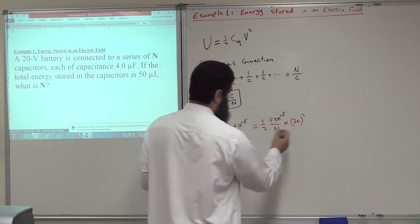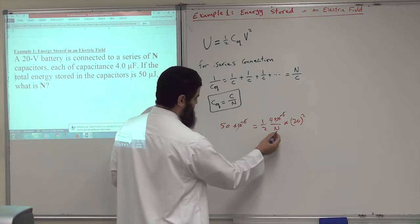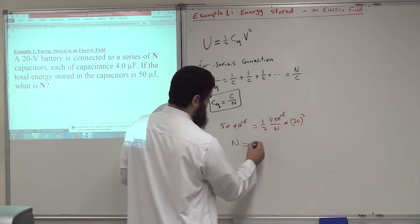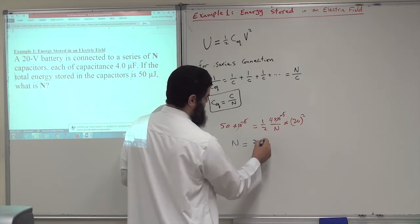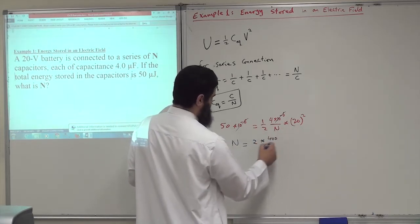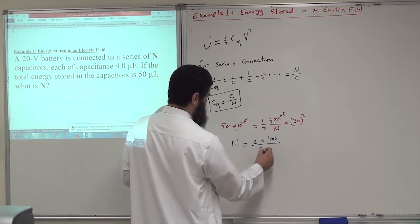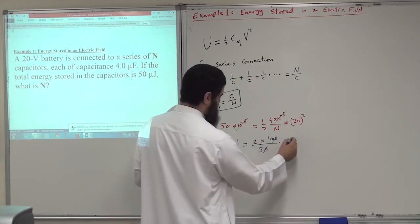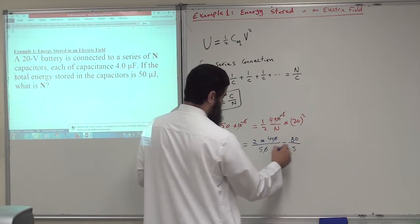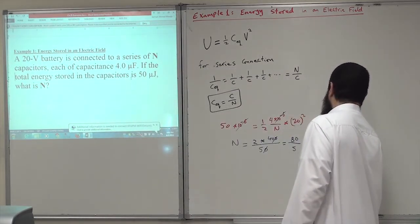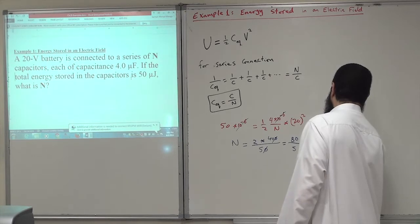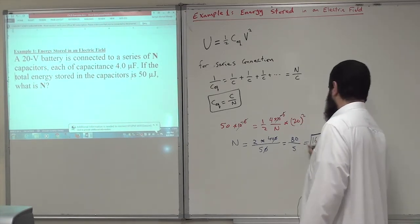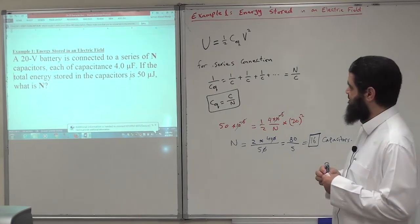Rearranging, N equals 2 multiplied by 400, so N divided by 50. After cancellation, we are left with 80 divided by 5, which is 16 capacitors. So the number of capacitors in this configuration is 16 capacitors.